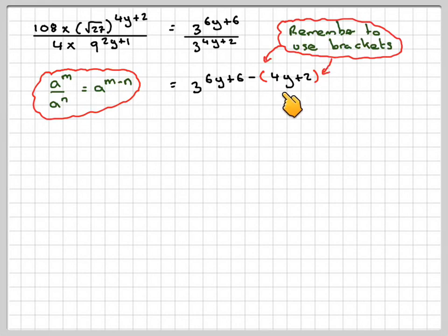Now just simplifying this using our algebra. We've got 3 to the 6y plus 6, minus 4y. And then a minus times a plus will make minus 2.